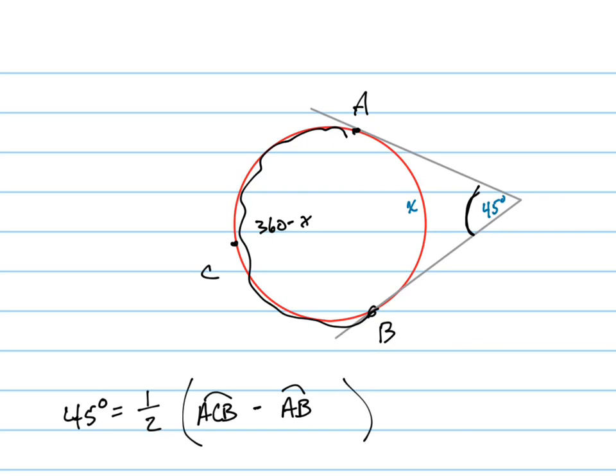So if this arc here, the yellow arc, is x, then the black arc is 360 minus x. So let's substitute in our values: this is 360 minus x minus - don't forget that's a minus - x. And now let's solve that equation.